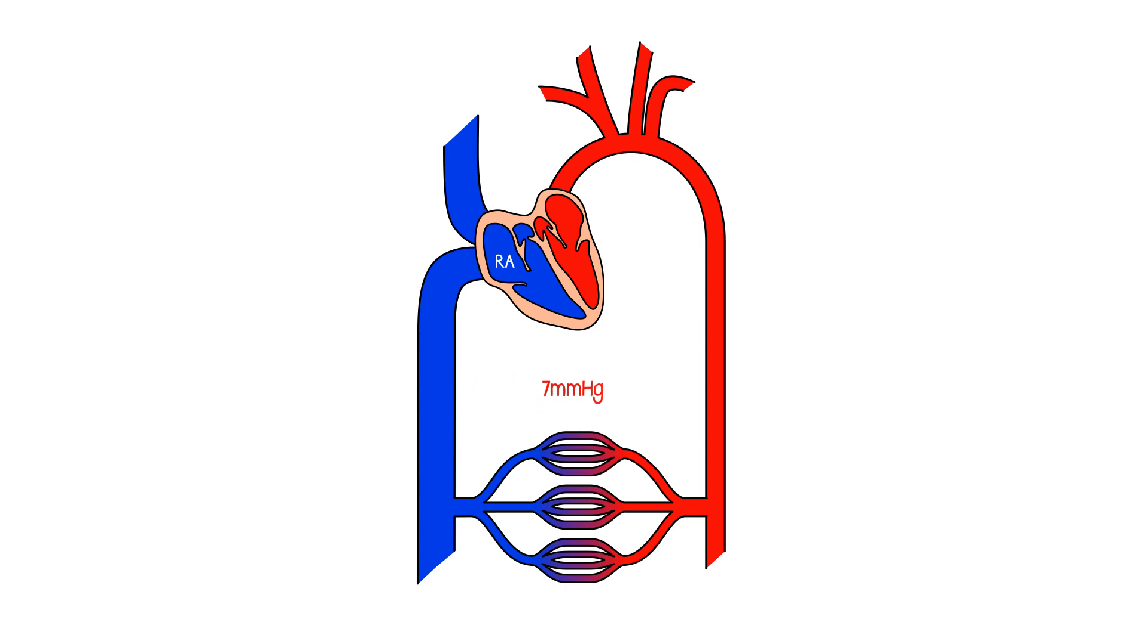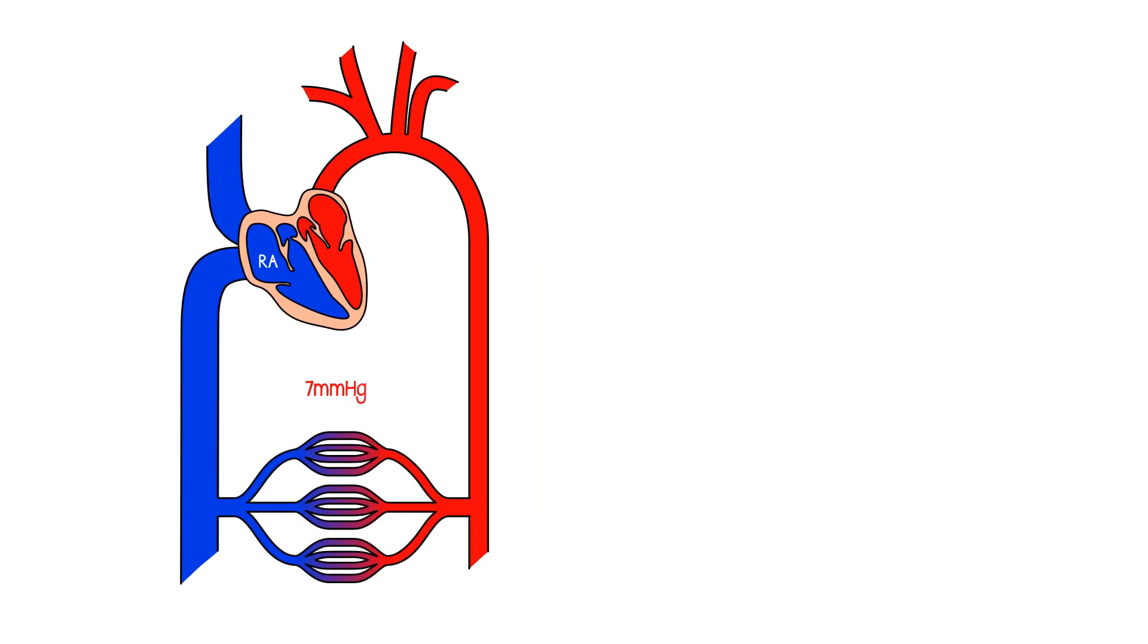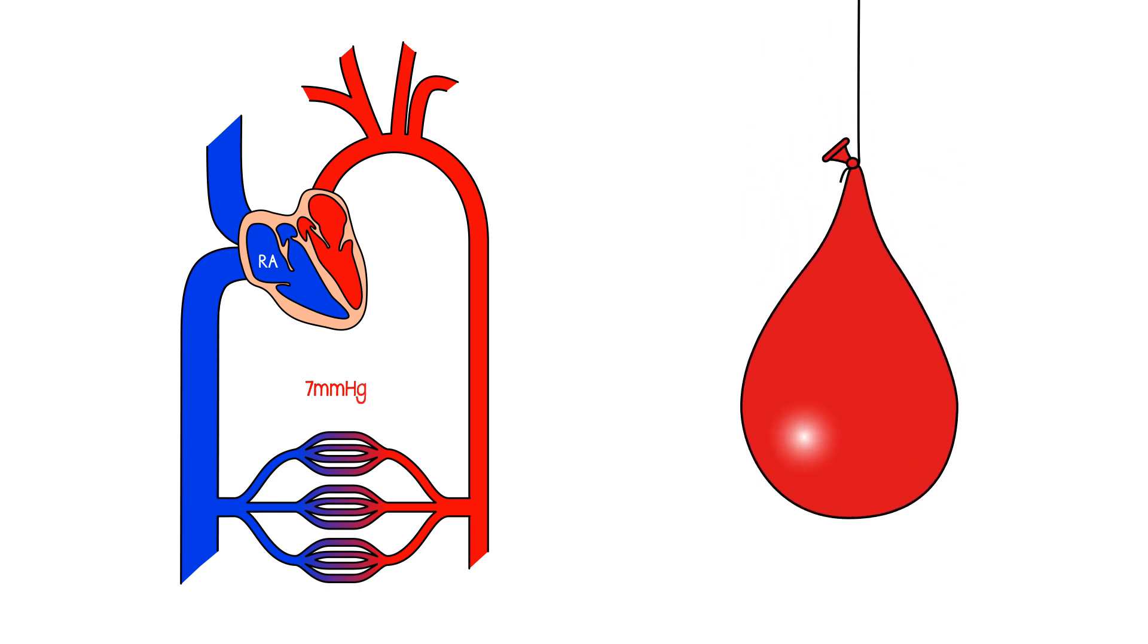Now the reason that there's a pressure anywhere in the circulation, if the heart has stopped, is because you've got blood, in effect, within an elastic bag. You can think of all of the blood vessels as being an elastic bag. And it's as if you've just tried to fill that bag with a little bit too much blood.